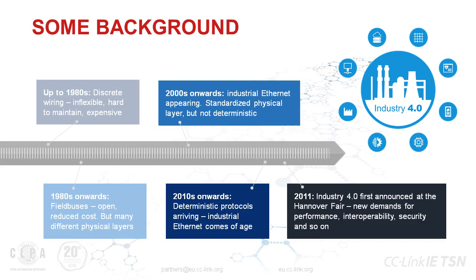Starting in the 1980s and onwards, we saw the introduction of field buses. They improved the situation because they allowed you to connect different devices together in a system. Rather than using inflexible discrete wiring, you could now connect everything together using a single cable, making things a lot more flexible and easier to install, maintain, and design. But they still weren't perfect — one of the main drawbacks was that individual field buses were not compatible with each other. If you had field bus A and wanted to use those devices with field bus B, that generally wasn't possible due to different physical layers and lack of interoperability.